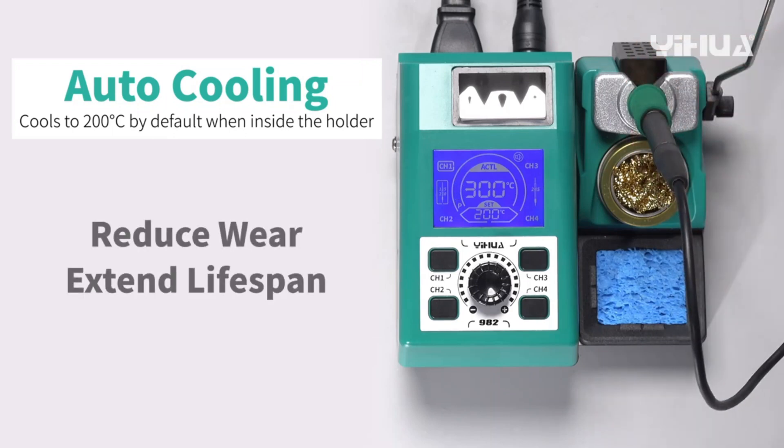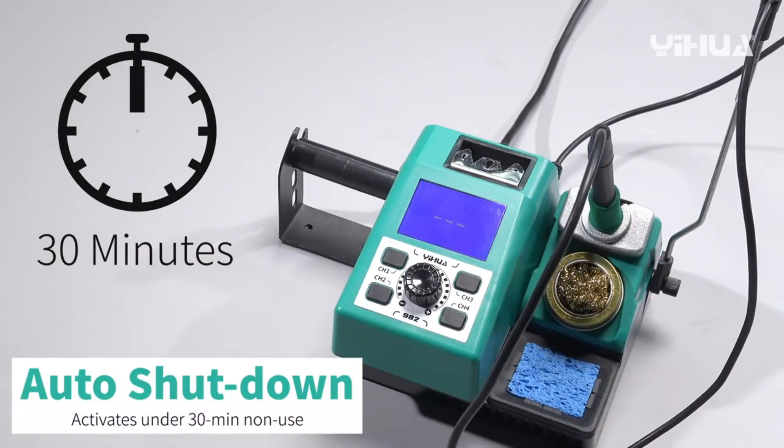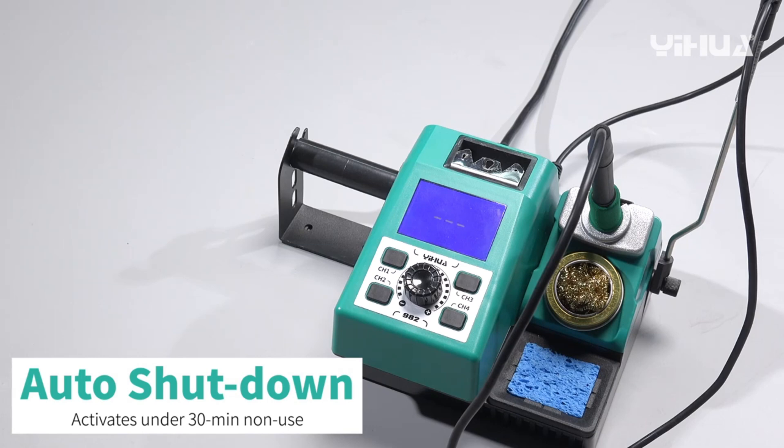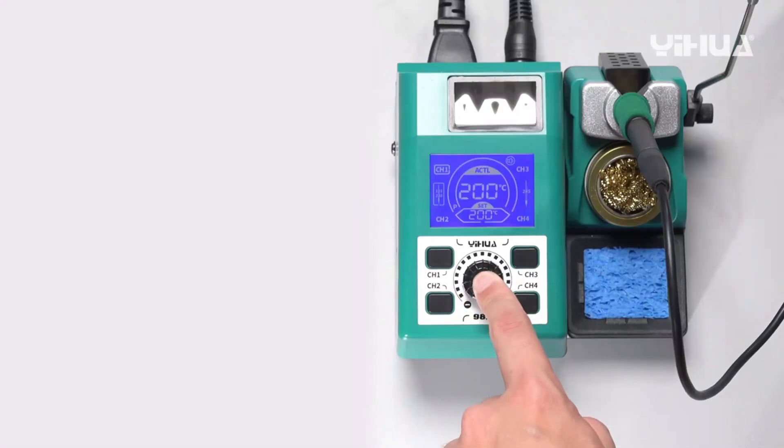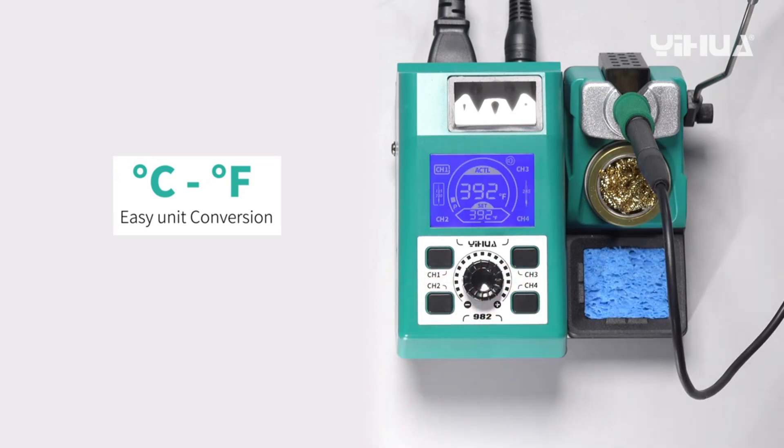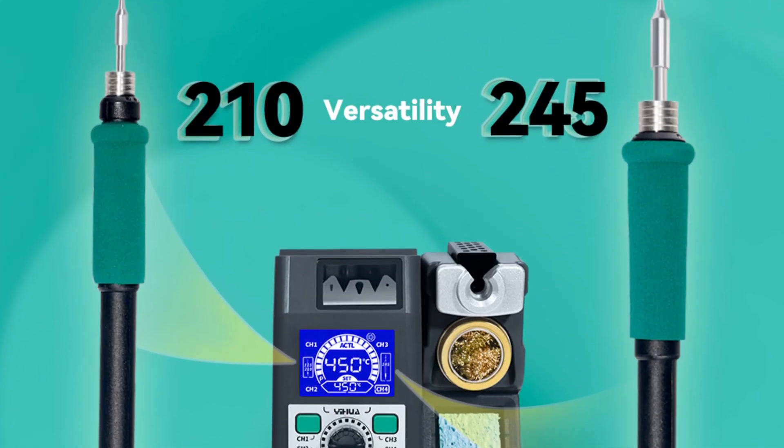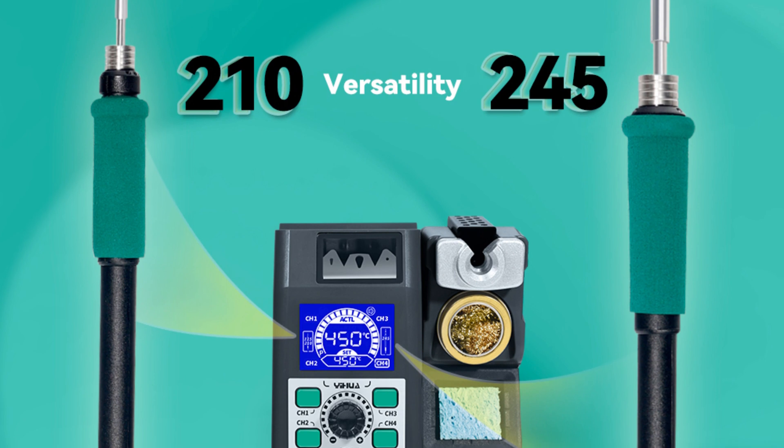The soldering station also offers convenience features like four preset channels, digital temperature calibration, sleep mode auto shutdown, and the option to switch between Celsius and Fahrenheit. The built-in metallic rack and elevated cable guide make changing soldering iron tips easy. The integrated dispenser stores solder wire, and the cleaning kit keeps the tip clean. The holder also features a metallic protective mesh for safety.